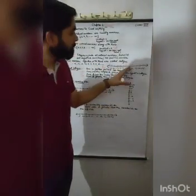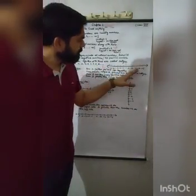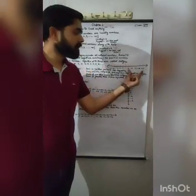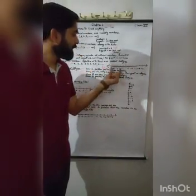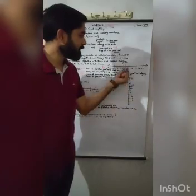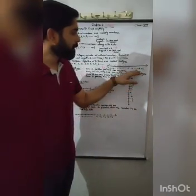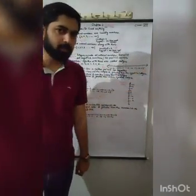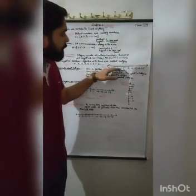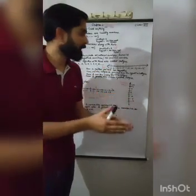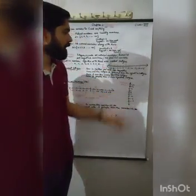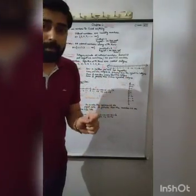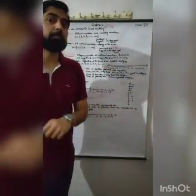In integers, we have three types of numbers. First is a positive number — the number we write with a plus sign. Second is a negative number — the number we write with a minus sign. And third is 0. Zero is very important: 0 is neither positive nor negative.